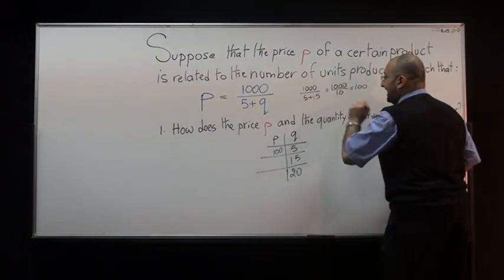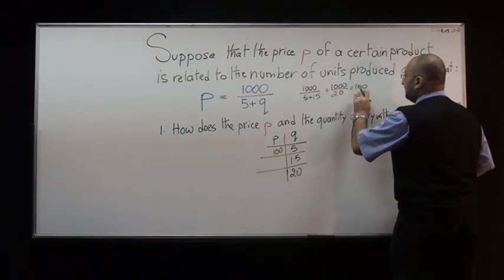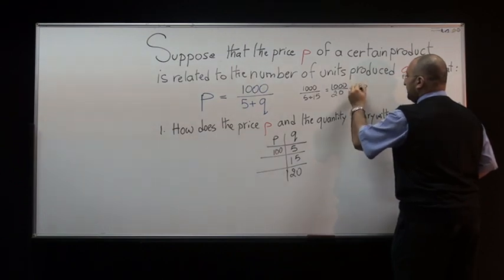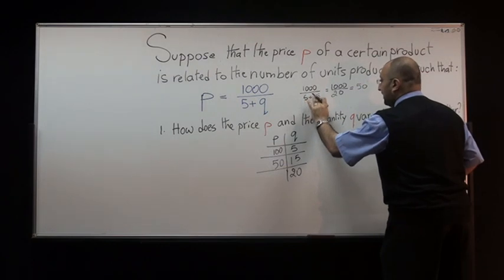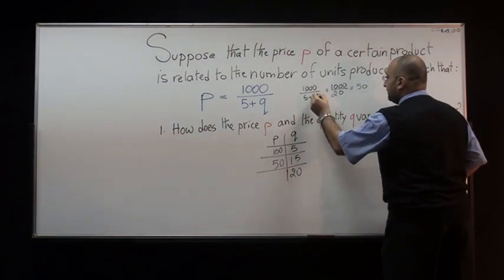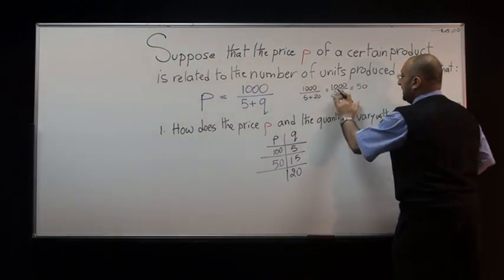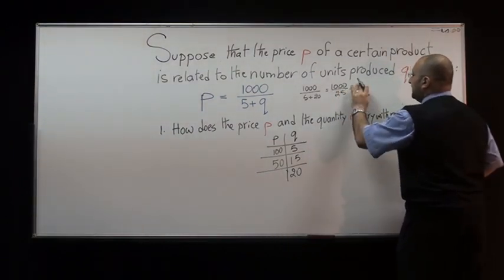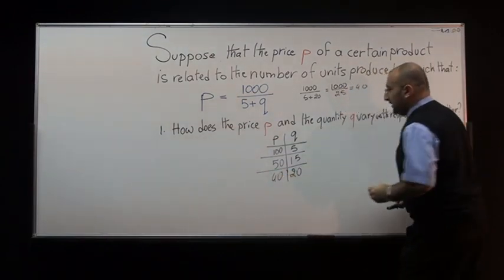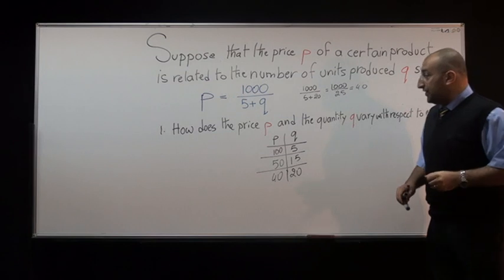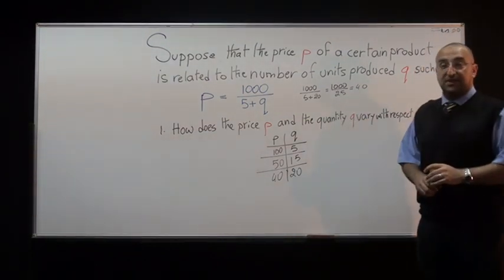For Q equals 15, we get 1000 over 20, which equals 50. Then for Q equals 20, we get 1000 divided by (5 plus 20), which is 1000 divided by 25, and the answer is 40. I'll pause the question again: how does the price P and the quantity Q vary with respect to each other?